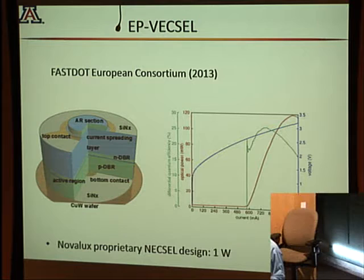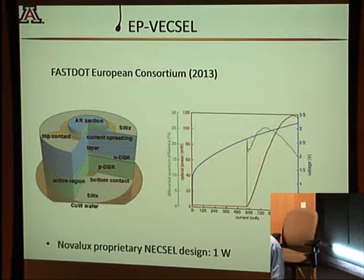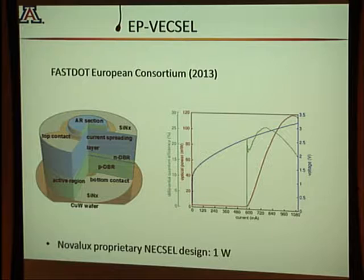People have built electrically pumped VECSELs, which I would not advise. They're very complicated, introduce large additional losses because you have to dope the Bragg mirror, and produce dual heating — which is really bad for these structures. The FAST-STAR European consortium recently reported about 100 milliwatts from one of these electrically pumped structures, and Novalux's Nexel gave about one watt.